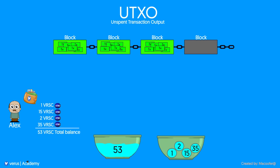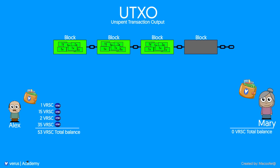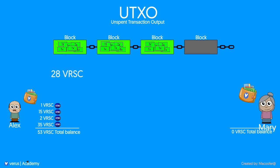Now let's have a look at what that means. Meet Mary, a friend of Alex. She recently created a Verus wallet, but does not have any coins yet. Alex wants to send Mary 28 of his coins to get her started.